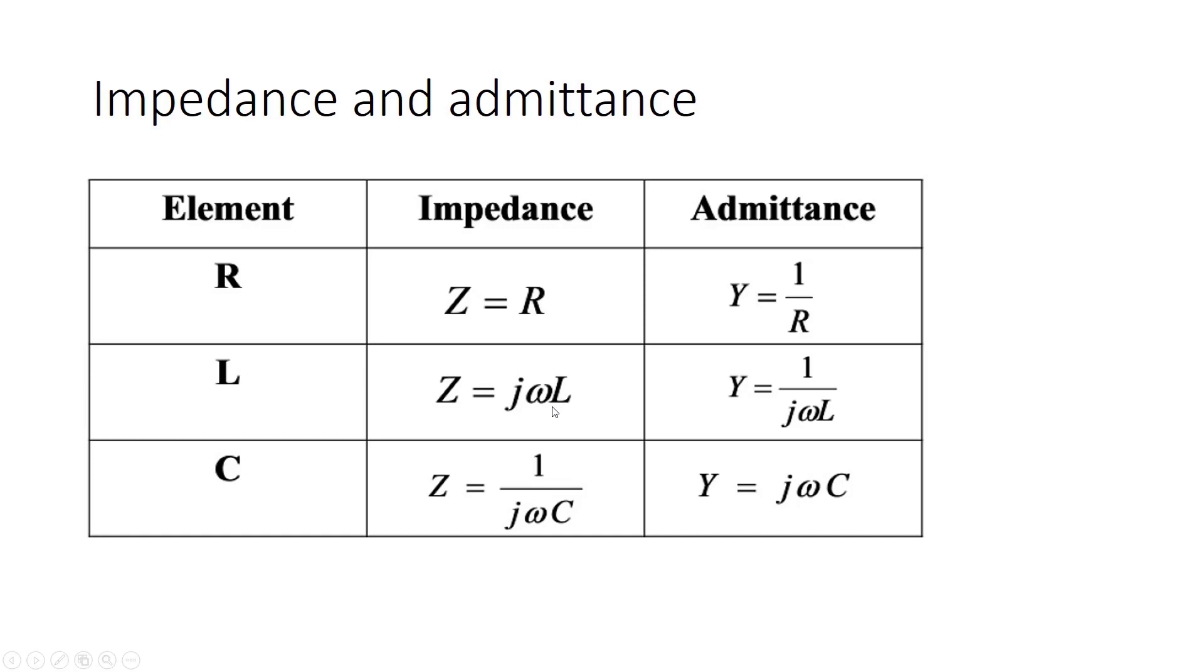So it shows that the impedance of inductor is actually proportional to frequency. As we increase frequency, the impedance increases. And admittance is 1 over jLω. So it's proportional to inverse of frequency.